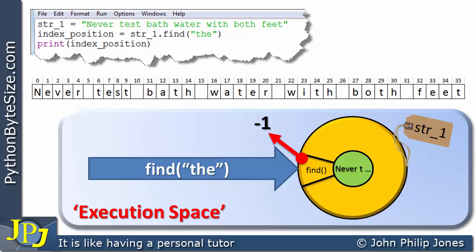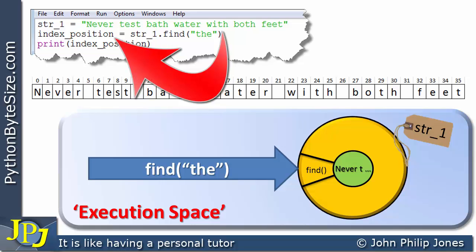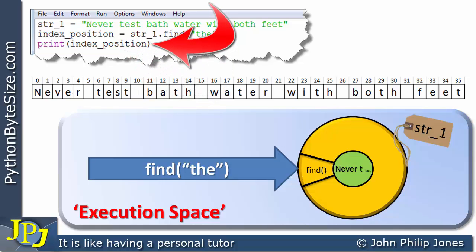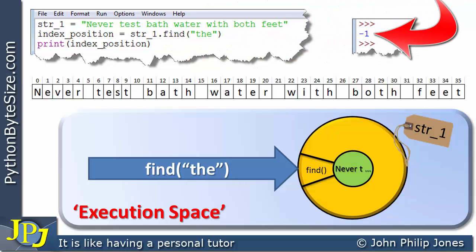Under these circumstances, the find will return minus one. This minus one is returned to the index_position variable. Consequently when we print out the index position, you can see the runtime shows minus one. So what happens with this find method: it will tell you the index position of the substring if it is found. If it cannot find the string it will return minus one, and as a programmer you will know that minus one means that substring does not appear in the full string.